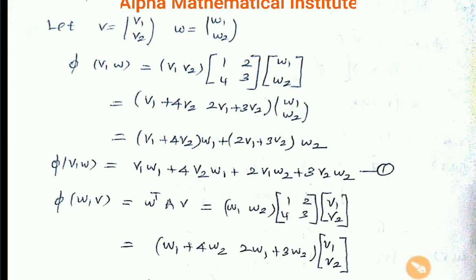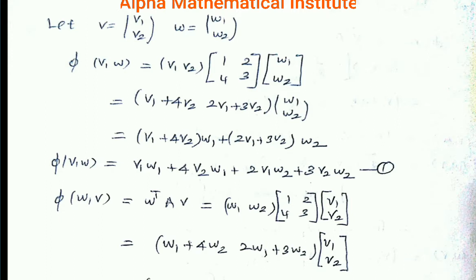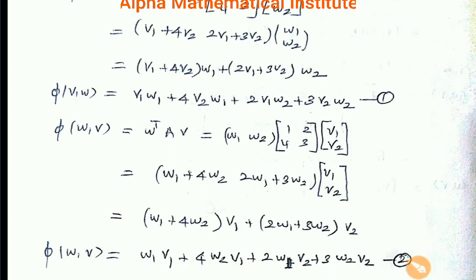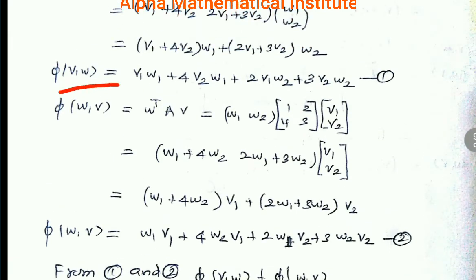Multiplying these matrices: first we get the row vector (V1 + 4V2, 2V1 + 3V2), then multiplying by the column vector (W1, W2) gives φ(V, W) = V1·W1 + 4·V2·W1 + 2·V1·W2 + 3·V2·W2. Call this Equation 1.